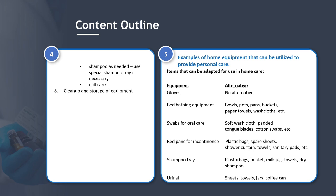Section 5: Examples of Home Equipment that Can Be Utilized to Provide Personal Care. Items that can be adapted for use in home care include: gloves — there are no alternatives to gloves; bed bathing equipment such as bowls, pots, pans, buckets, paper towels, and washcloths; swabs for oral care including soft washcloths, padded tongue blades, and cotton swabs; bedpans for incontinence using plastic bags, spare sheets, shower curtains, towels, and sanitary pads; shampoo tray substitutes such as a plastic bag, bucket, milk jug, towel, or dry shampoo; and urinal substitutes such as sheets, towels, jars, or a coffee can.